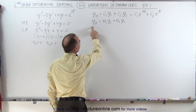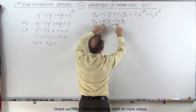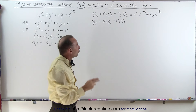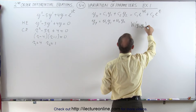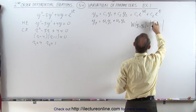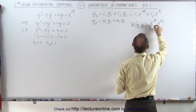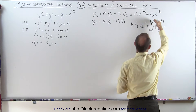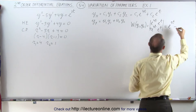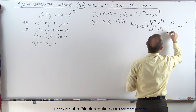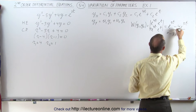Now to find the particular solution, since we already know what y1 and y2 are — e to the 4t and e to the t — we need to find u1 and u2, which involves finding the Wronskian. The Wronskian of y1 and y2 is the determinant of y1, y2 and their derivatives: e to the 4t, e to the t, 4e to the 4t, and e to the t. That gives e to the 5t minus 4e to the 5t, which equals negative 3e to the 5t.